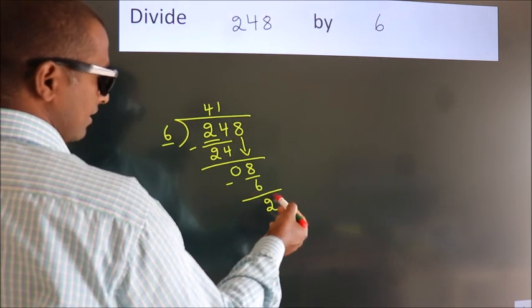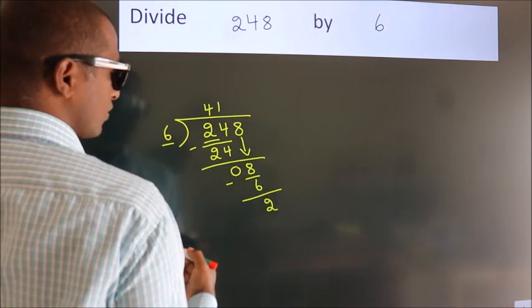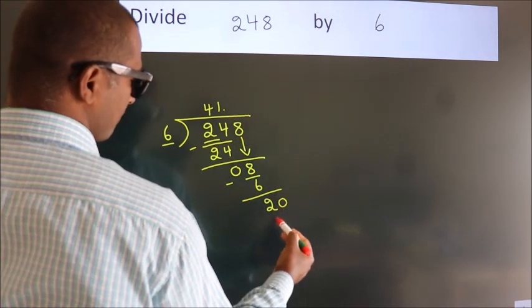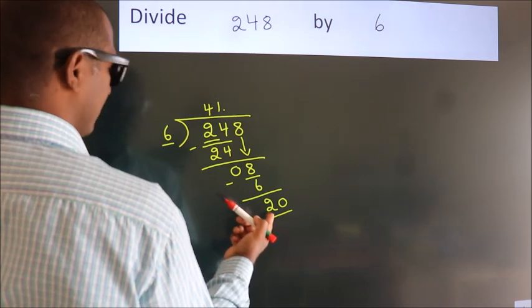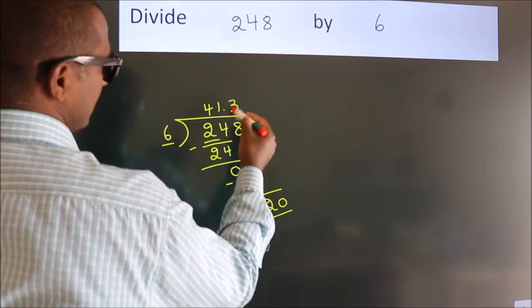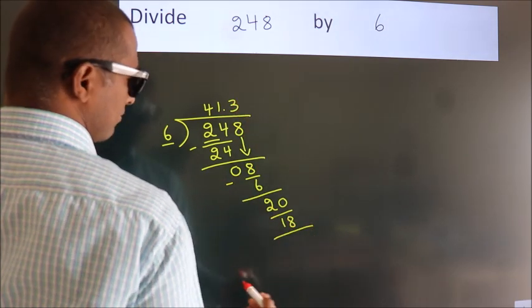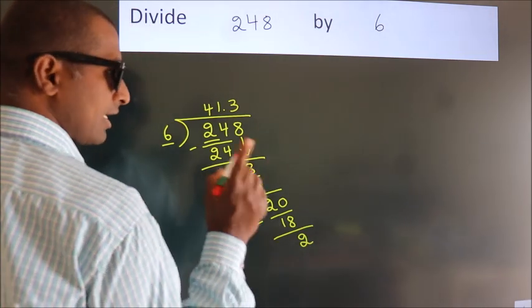After this, no more numbers to bring down, so what we do is put a decimal point and take zero. 20. A number close to 20 in the 6 table is 6 times 3, which is 18. Now we subtract and get 2.